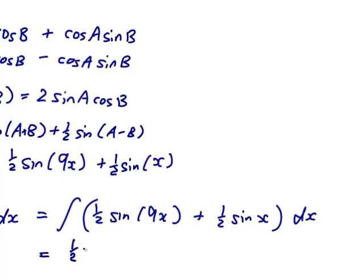And let's see, the half will stay there because it's multiplied on. The integral of sin is minus cos, but that's not an x, it's a 9x, so I'm going to have to divide by the 9. And again, the half will stay there and the integral of sin is in fact minus cos plus c.